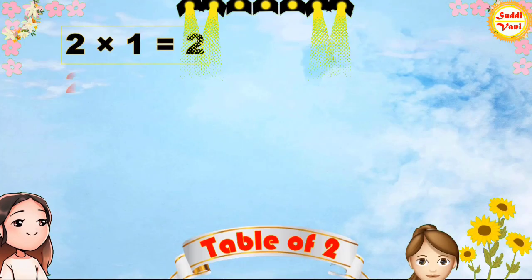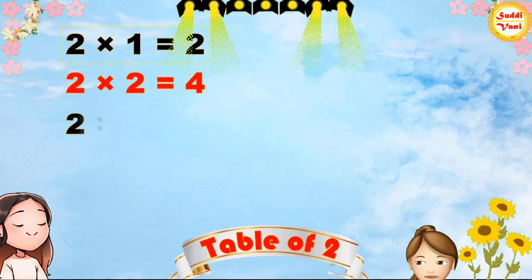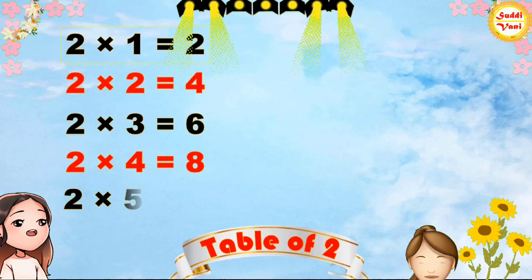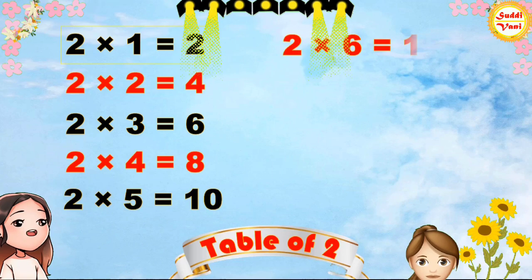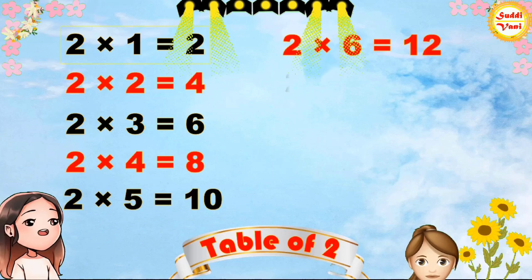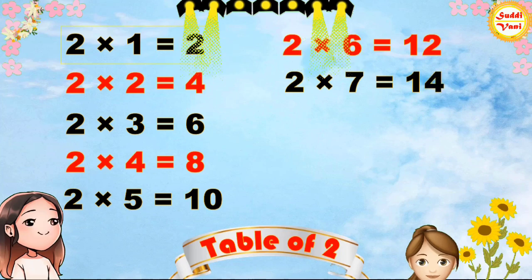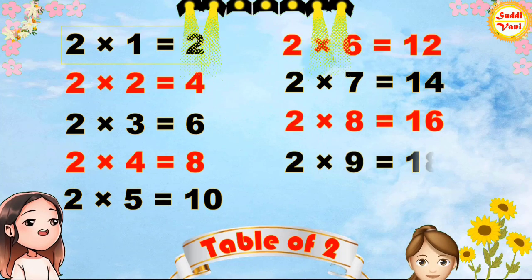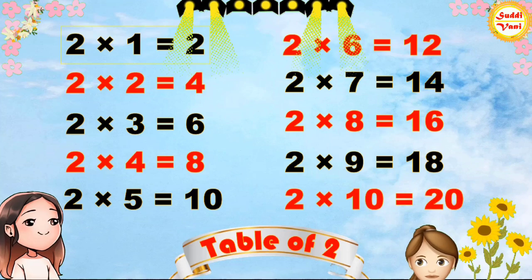2×1=2, 2×2=4, 2×3=6, 2×4=8, 2×5=10, 2×6=12, 2×7=14, 2×8=16, 2×9=18, 2×10=20.